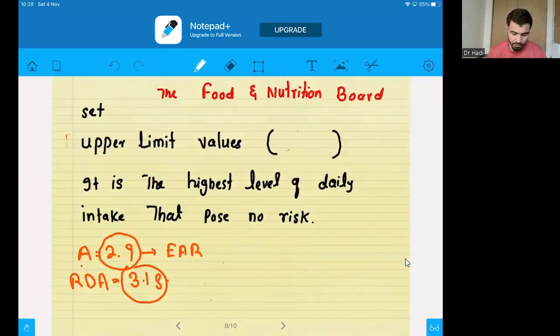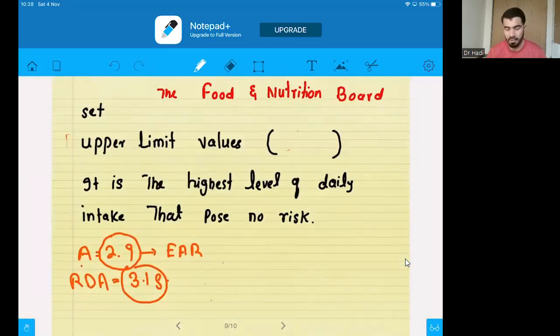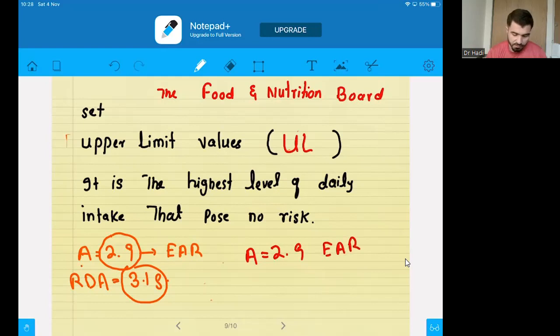Now the last term we have is the upper limit values, that is UL. Do you remember that we had the value, the EAR value for A was 2.9? And then we set the RDA value for A. The RDA value was 3.1 gram. It was a question. Can we go a little bit further from that value? Can we go 3.2, 3.3, 3.4, 3.5 gram? Can we increase this? Can we take this A beyond 3.1 gram? The question is yes.